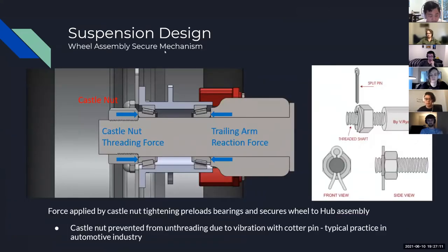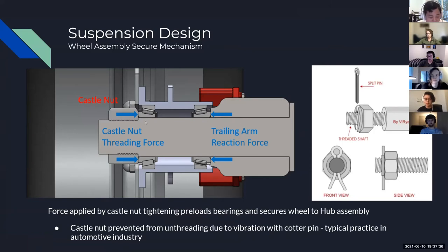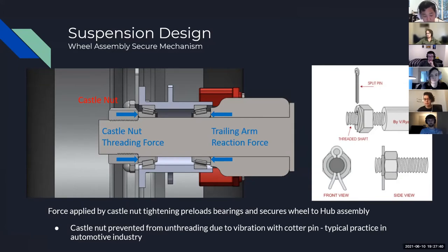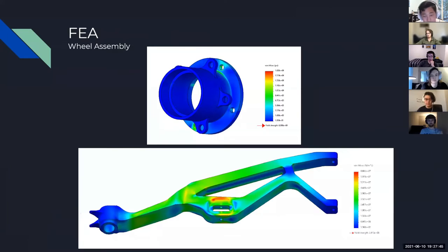For our wheel assembly securement mechanism: the dead spindle is inserted into the hub with bearings rotating around the spindle, and a castle nut provides a compressive force that holds the wheel in place and pre-loads the bearings. To prevent the castle nut from unthreading through vibration, we use a cotter pin — a pin that goes through the nut and through the screw — which is a typical practice in the automotive industry.